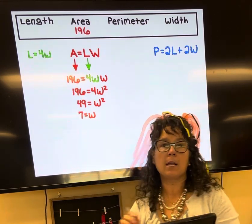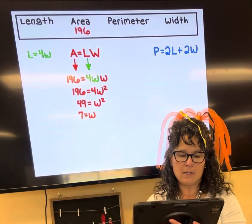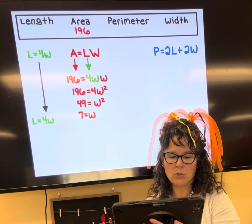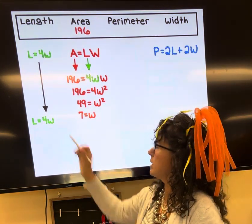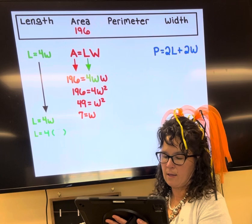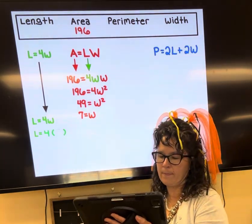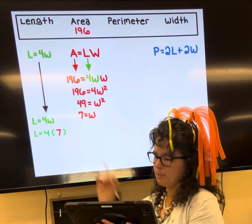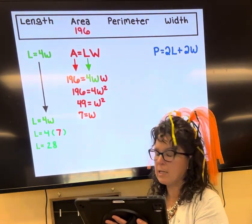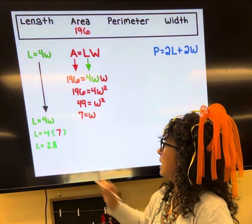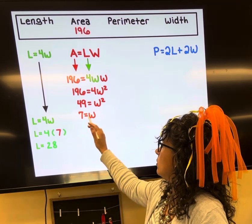Now that I know the width, I can come over here and replace the width with seven. So I'm going to have my L equals 4W, and then let's replace the width with seven. And four multiplied by seven is 28, so the length is 28.